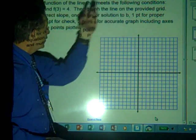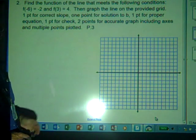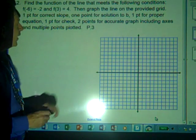Find the function of the line that meets the following conditions: f(-6) = -2 and f(3) = 4. Then graph the line on the provided grid.